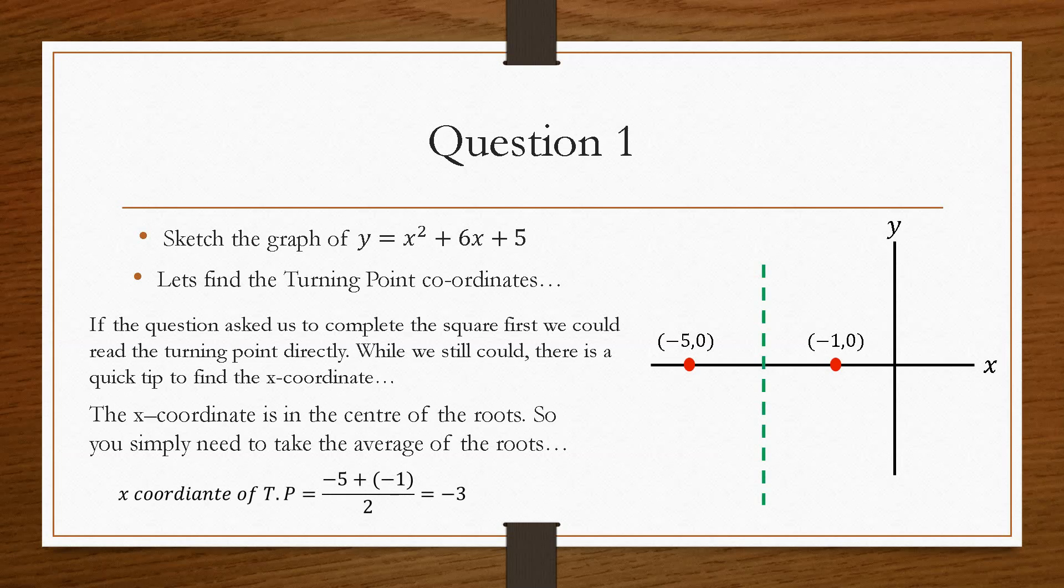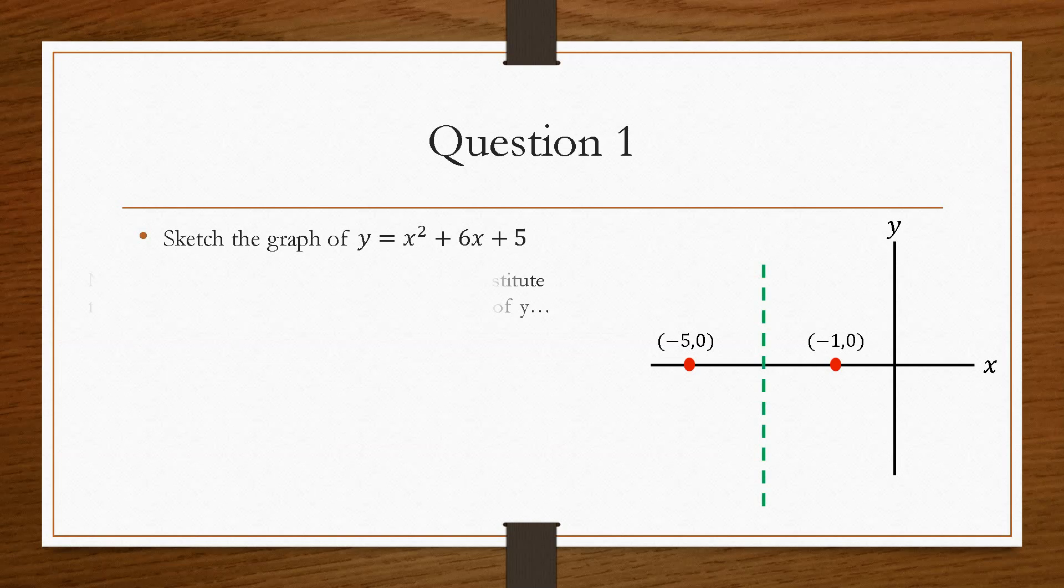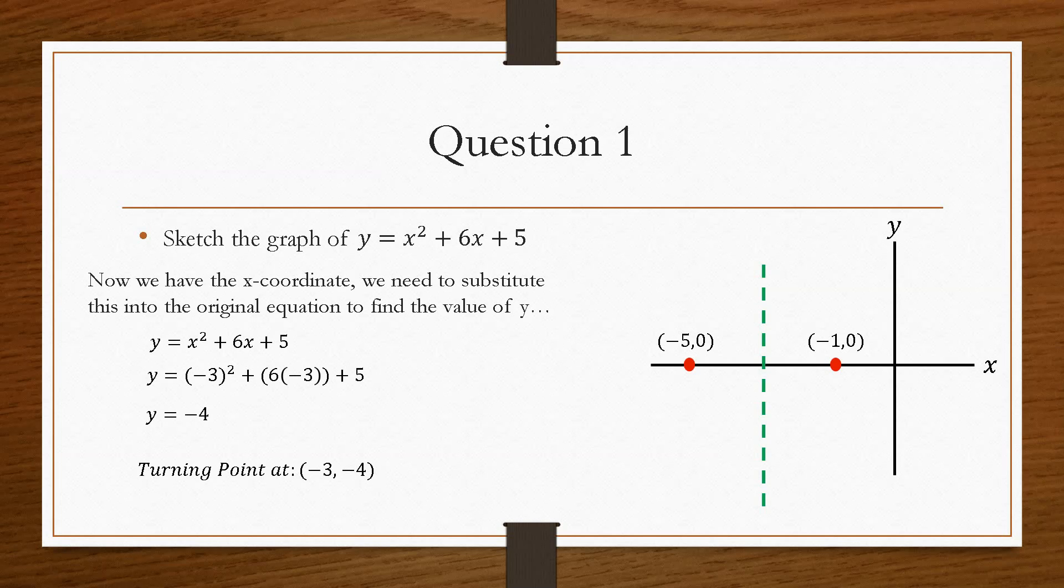So now that we have the x-coordinate of the turning point, the way that we find the corresponding y value is by substituting the x equals minus 3 into this equation, and that will give us the corresponding value of y. So this here tells us that the turning point is at minus 3, minus 4, and we can plot that there.